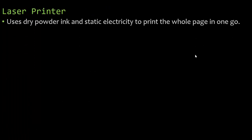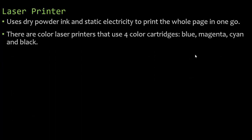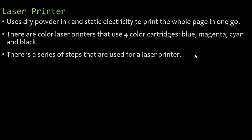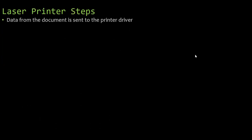A laser printer uses dry powder ink and static electricity to print the whole page in one go. There are also color laser printers, and they use four color cartridges: blue, magenta, cyan, and black. They mix those colors together to get a whole range of colors. There's a series of steps used for a laser printer that we need to go over, because you've got to know how a laser printer works.